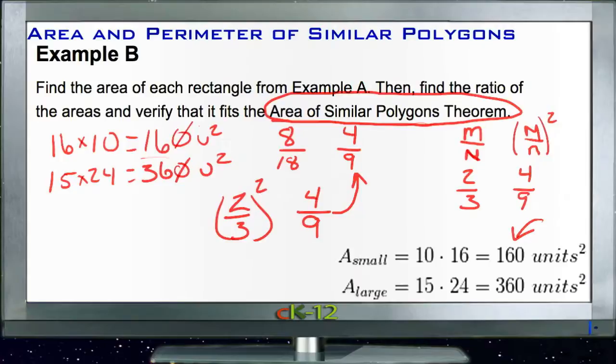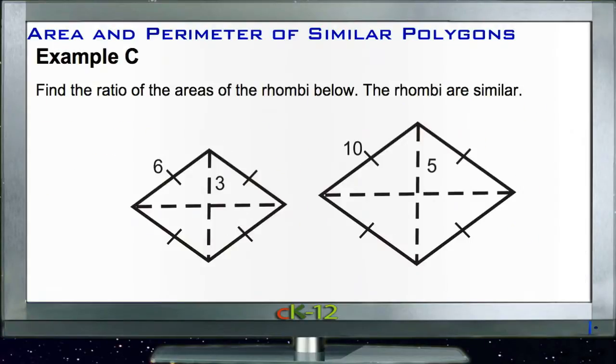Example C says find the ratio of the areas of the rhombi below. The rhombi are similar. Since we know they're similar and we know that the scale factor of the two of them is going to be the same as 6 to 10, well 6 to 10, if that's our scale factor, that reduces to 3 out of 5.